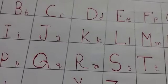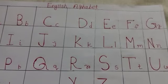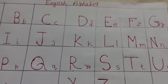There are 26 letters in the English alphabet. They are written in two different forms, large and small.